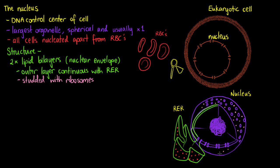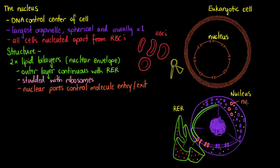We don't want the genetic material to accidentally leave the nucleus, and we don't want anything in our cytoplasm to accidentally diffuse into the nucleus. We also have something that spans across those two layers called nuclear pores, which help control molecule entry and exit to our nucleus. The nuclear pores span through both membranes of our nuclear envelope and are made of protein complexes. We refer to the protein complex that makes our nuclear pores as the NPCs, or nuclear pore complex.